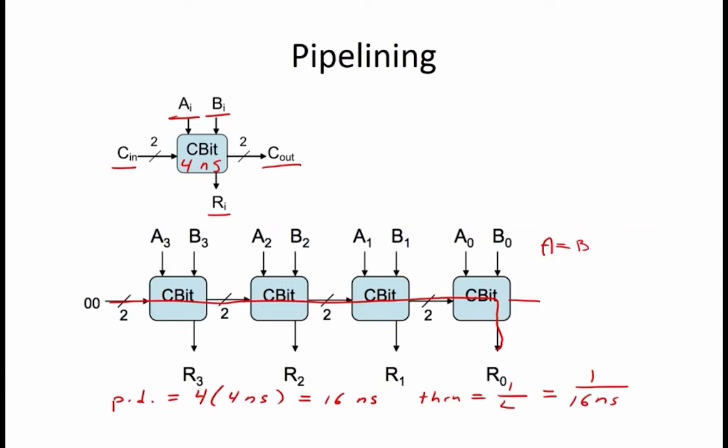The Cout1 bit indicates whether A is greater than B, and the Cout0 bit indicates whether B is greater than A. Since the numbers are identical, neither of these inequalities is true, so both Cout bits are 0.